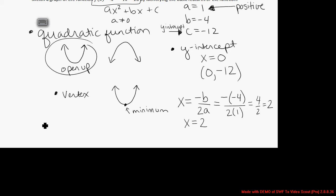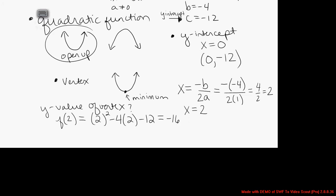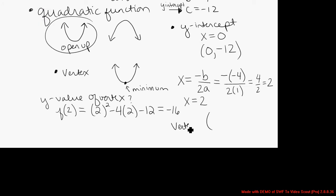But the vertex is a point. We want to go ahead and find the y value of that point as well. So the y value of the vertex, we know the x value. We'll go ahead and plug x equals 2 into the formula and evaluate to identify the y value of the vertex. So back to the function's formula, I let x be 2. And when you plug that in, you'll find that the value is negative 16. So what I've learned is that the vertex is the point 2, negative 16.